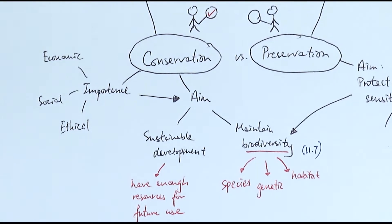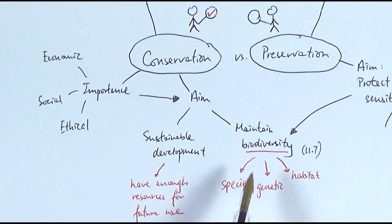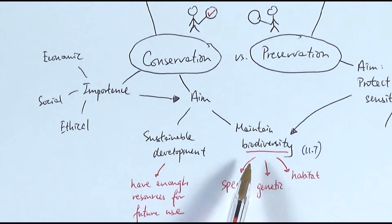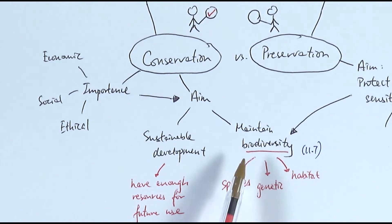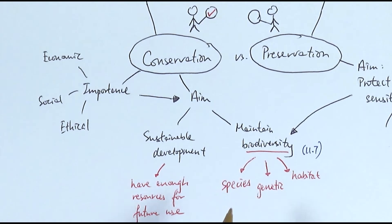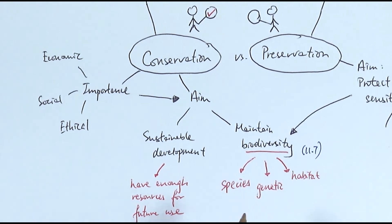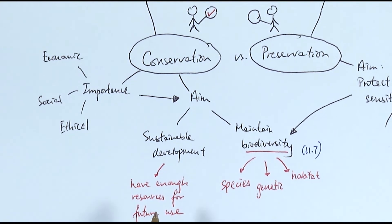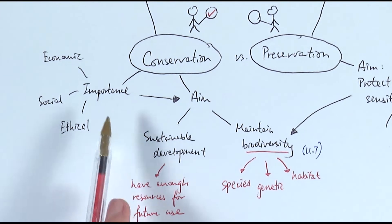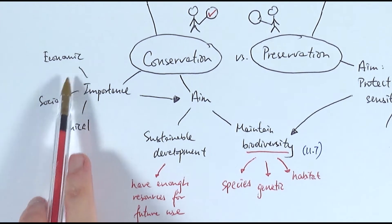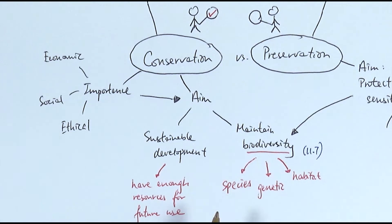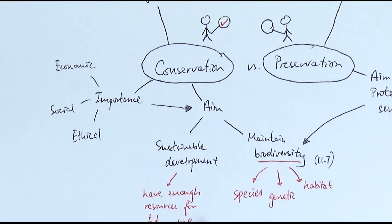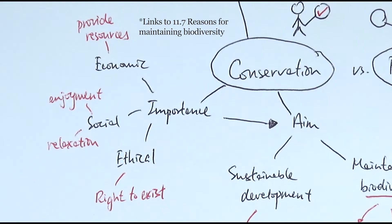Maintaining biodiversity is one of the key aims of conservation, and this represents the scientific importance of conservation. But we can also look at the importance of it in three other aspects.